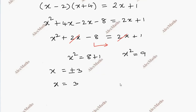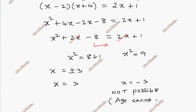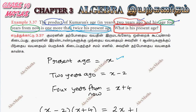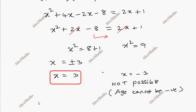So x equals 3 or x equals minus 3. Since x represents age, age cannot be negative, so we reject x equals minus 3. Therefore x equals 3 years, which is Kumaran's present age.